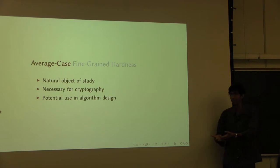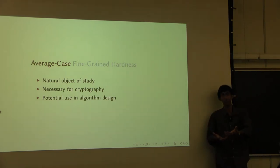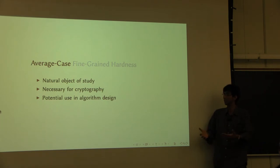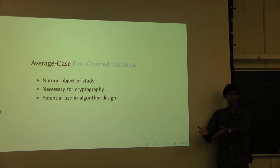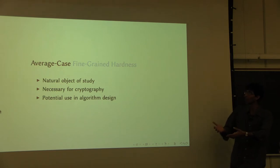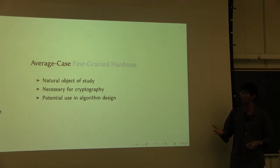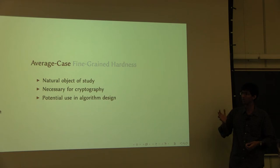These kinds of worst-case to average-case reductions are quite important for the reason that we do not actually know that much about average-case complexity. We know a lot more about worst-case complexity, and if we want to translate this knowledge to average-case complexity, then you need these worst-case to average-case reductions — you can say that if problem A is hard in the worst case, then problem B is actually hard in the average case. Unfortunately, we do not know too many examples of such reductions. We know certain examples, like in the case of discrete log or lattice problems. Reductions in polynomial time are very rare.